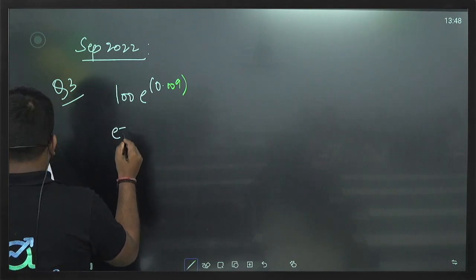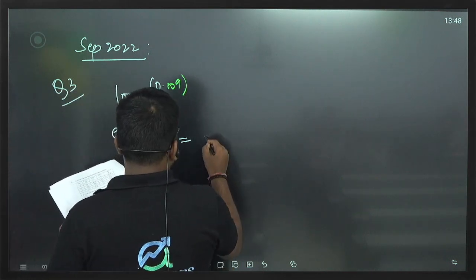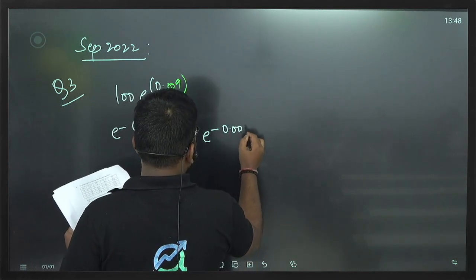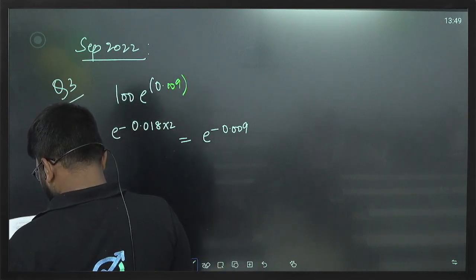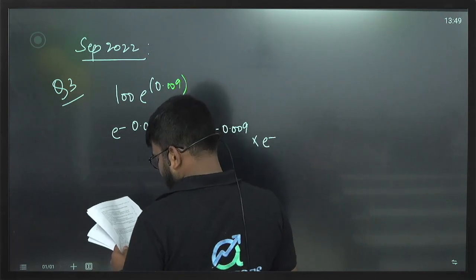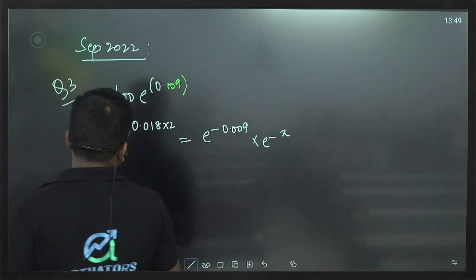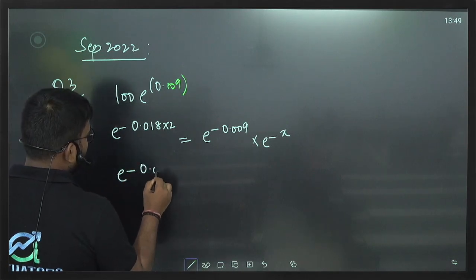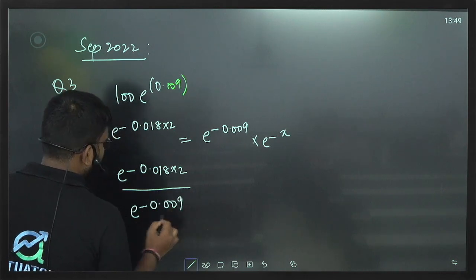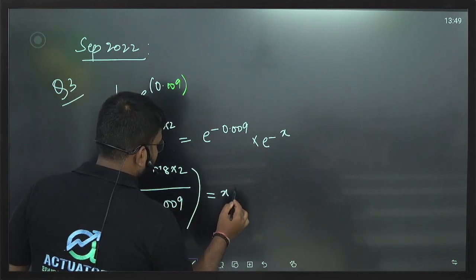So, e to the power minus 0.018 into 2 should be equal to e to the power minus 0.009, into e to the power minus x. We need to find x from here. This will be e to the power minus 0.018 into 2, whole divided by e to the power minus 0.009.